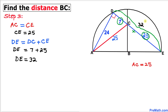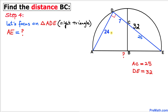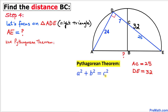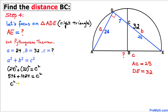Now let's focus on the big triangle ADE and find the distance AE. Since this is a right triangle, we use the Pythagorean theorem again: a² + b² = c². Here a = 24 and b = 32, so we get 24² + 32² = c².